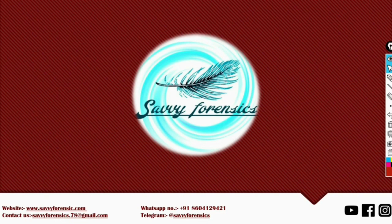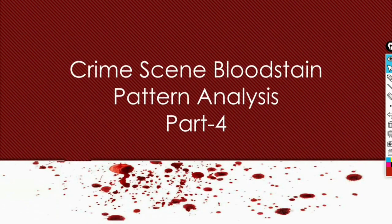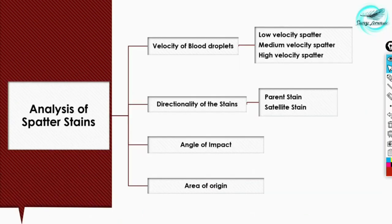Welcome back to our YouTube channel Savvy Forensics. This is the fourth part of crime scene blood stain pattern analysis, in which we'll be studying the analysis of spatter stains. Up till now we have covered basics of blood stain pattern analysis, their biological properties, types, and chemical enhancement procedures. In this video we'll be analyzing how forensic experts analyze spatter stains and obtain investigative leads.